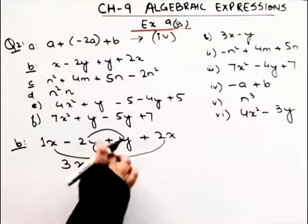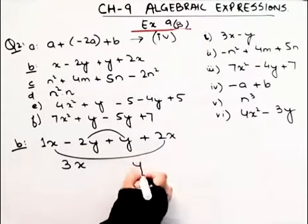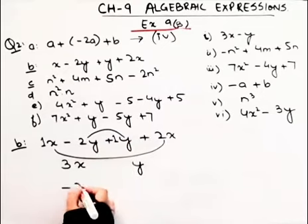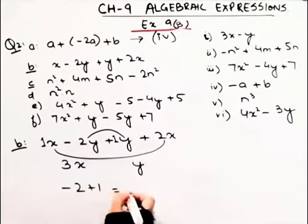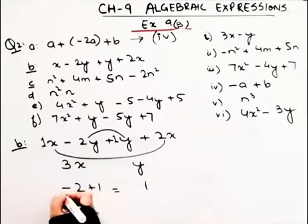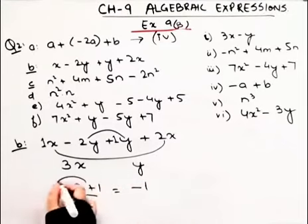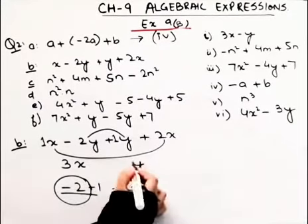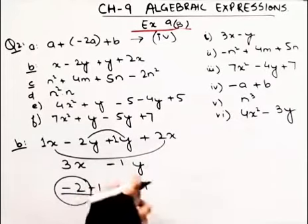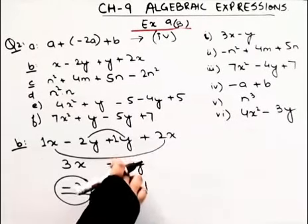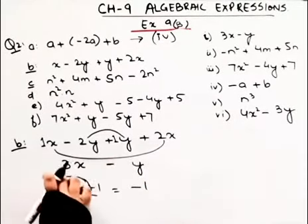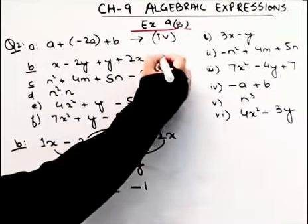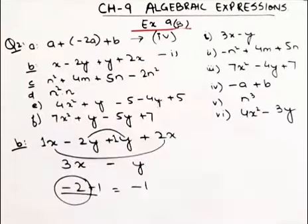For the y terms: –2 + 1 — how much is that? Minus 2 plus 1 is 1 with a negative sign, because 2 has a greater value. So we get minus y, giving us 3x – y. That means the answer for part B is the first part.